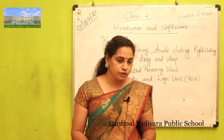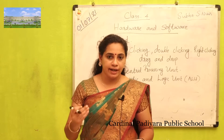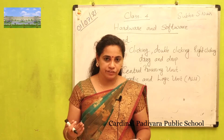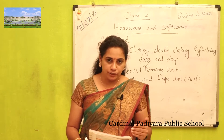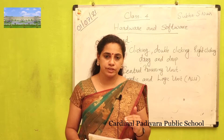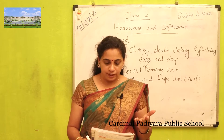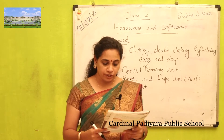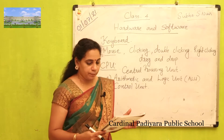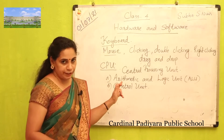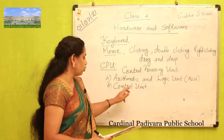The Arithmetic and Logic Unit (ALU) performs all arithmetical calculations like addition, subtraction, multiplication, division, and all logical operations. The Control Unit controls all the functioning of the parts of the computer. So CPU is divided into two parts: ALU (Arithmetic and Logic Unit) and CU (Control Unit).